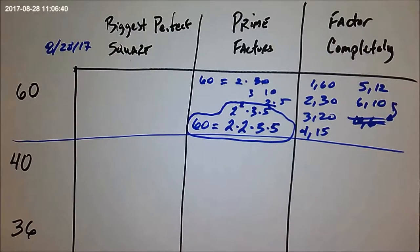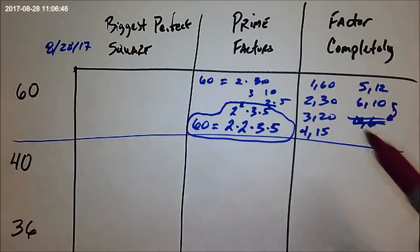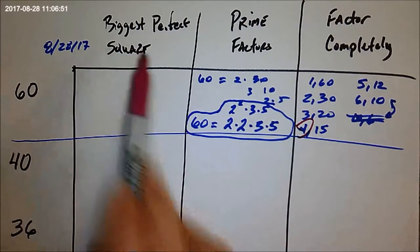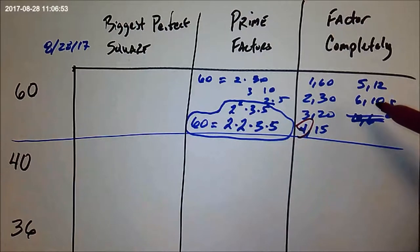Now, factor to find the biggest perfect square. So perfect squares, again, are numbers times themselves that equal something. So like four is a perfect square, because it's two times two. Now the way to find the biggest perfect square is actually to look at these complete set of factors.